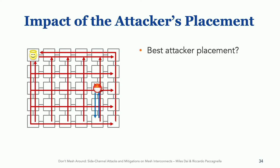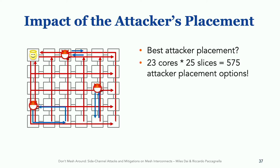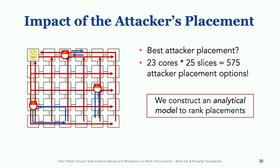We can ask: what is the best attacker's placement? It turns out answering this question is non-trivial because on our processor — which is not even one of the largest ones that uses a mesh — there are 575 different placement options for the attacker. So in our paper, to rank these placements, we built an analytical model.